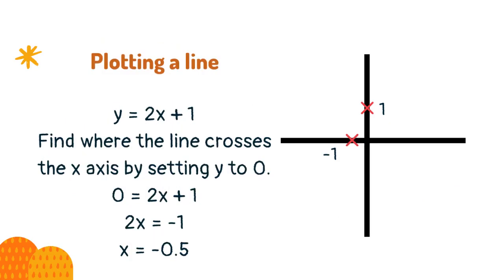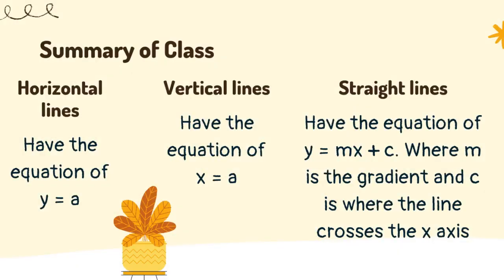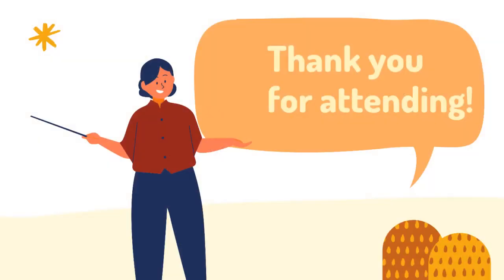Find where the line crosses the x axis by setting y to zero. This gives you two points on the axes. Join up the points. We'll see you next time.